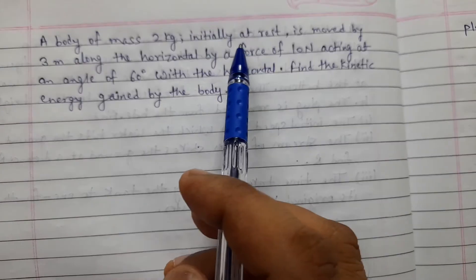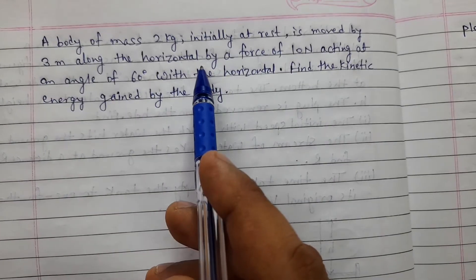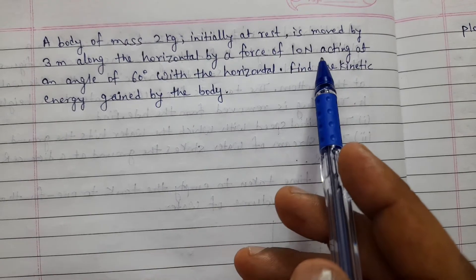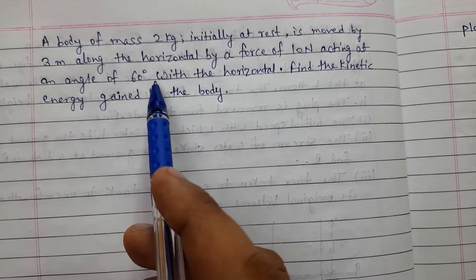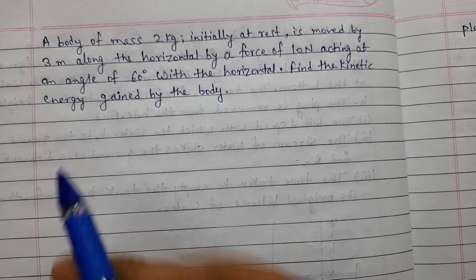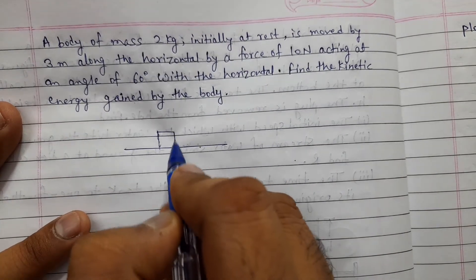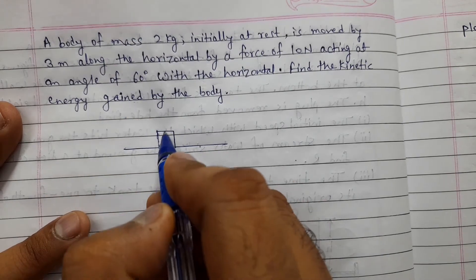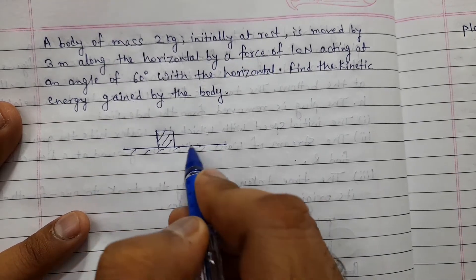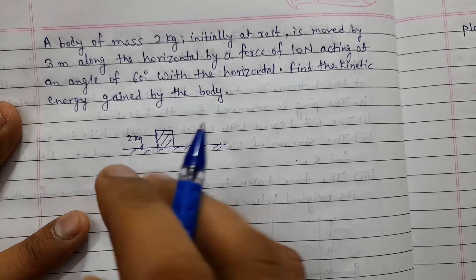A body of mass 2 kg initially at rest is moved by 3 m along the horizontal by a force of 10 N acting at an angle of 60 degrees with the horizontal. Find the kinetic energy gained by the body. So, there is a body with mass 2 kg given, this is ground, 2 kg mass is given. Initially, it is at rest.